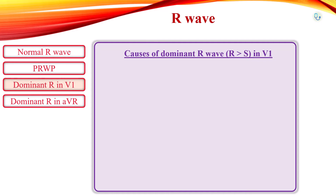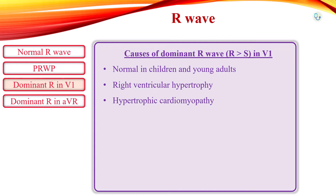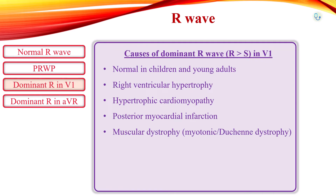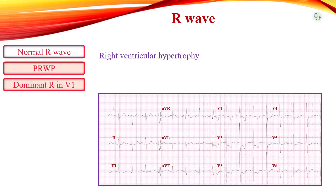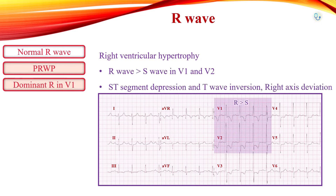Dominant or tall R-wave in leads V1 or V2 is normally seen in children and young adults. Dominant R-wave in V1 can also be seen in right ventricular hypertrophy, hypertrophic cardiomyopathy, posterior myocardial infarction, muscular dystrophies including myotonic dystrophy and Duchenne dystrophy, right bundle branch block, Wolf-Parkinson-White syndrome type A, and dextrocardia. In right ventricular hypertrophy and hypertrophic cardiomyopathy, dominant R-wave in right-sided leads is caused by increased rightward depolarization due to increased ventricular mass. In this EKG, dominant R-wave with ST-segment depression and T-wave inversion in right precordial leads with right axis deviation can be observed — findings typically seen in right ventricular hypertrophy.